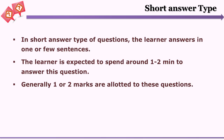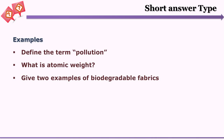Now let's look at short answer type and essay type questions — the ones which require the learner to write answers, as opposed to objective questions where the learner selects the correct answer. In short answer type questions, the learner gives the answer in one or two sentences. The learner is expected to spend around one to two minutes and accordingly around one to two marks are allocated. Examples: 'Define the term pollution,' 'What is the atomic weight of a certain element,' 'Give two examples of biodegradable fabrics.'